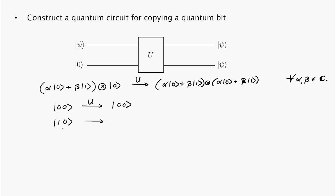So we have one zero. What must happen to this? Well the second qubit must look like the first one, so it must copy this value, so it must get mapped to one one. And now of course since U is a linear map, what does this tell us about where alpha zero zero plus beta one zero gets mapped to?